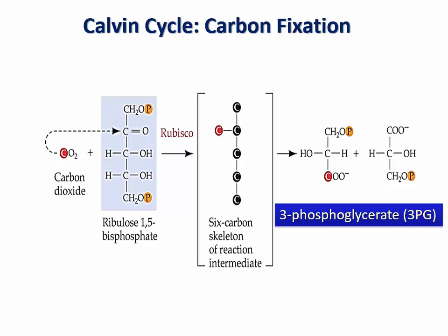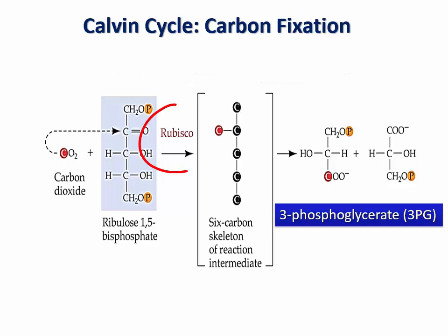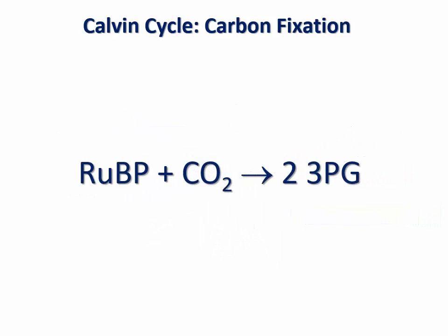This is an important reaction as it fixes atmospheric CO2 in land plants and dissolved CO2 in aquatic plants, thus removing it from the environment and fixing it in organic molecules. This carbon fixation is catalyzed by an enzyme known as ribulose bisphosphate carboxylase/oxygenase, or RUBISCO. This enzyme is believed to be the most abundant protein in living organisms.